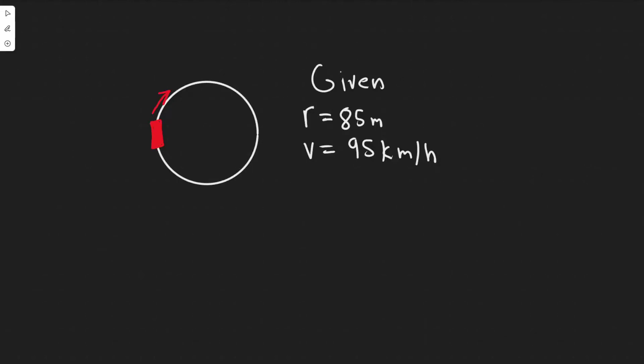In this problem we're told: how large must the coefficient of static friction be between the tires and the road if a car is to round a level curve of radius 85 meters at a speed of 95 kilometers per hour?